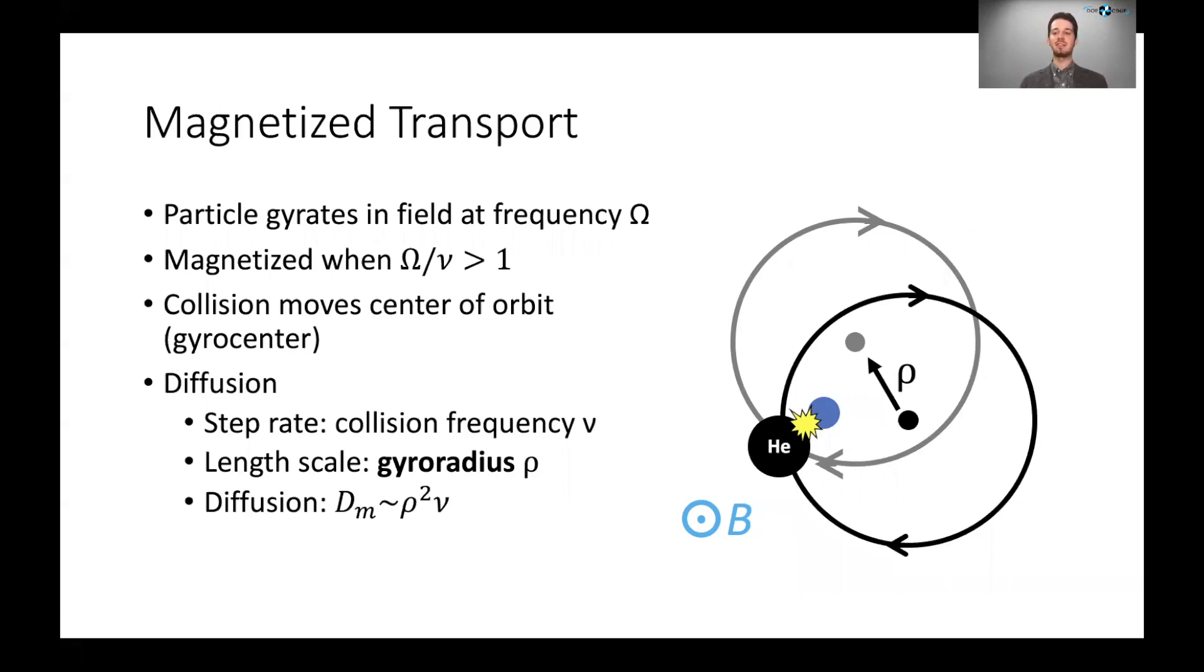Now once we add the magnetic field we have a very different picture of how diffusion and transport occurs because instead of streaming along straight line trajectories in the absence of collisions, charged particles will now be undergoing helical trajectories around the magnetic field lines. So in this figure you see here we have an out of plane magnetic field and so the helical trajectories appear as circles in the plane.